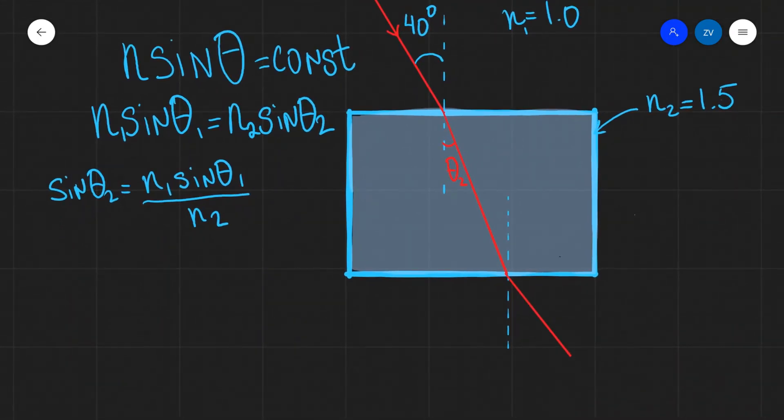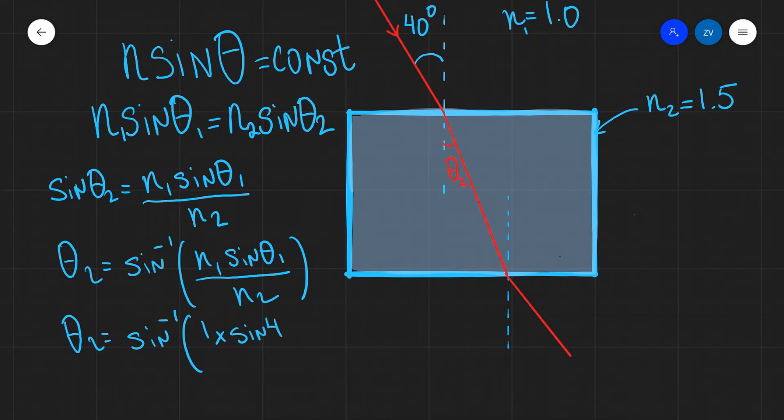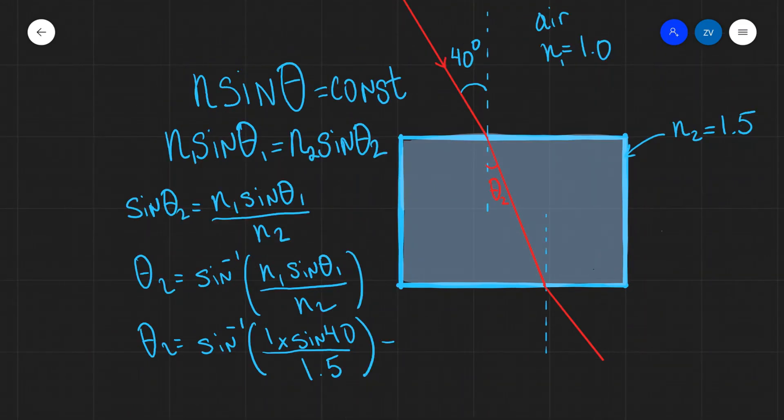We need to take the inverse sine now. So theta 2 will be equal to the inverse sine of N1 sine theta 1 divided by N2 like so. And now we can start plugging in some numbers. Theta 2 will be equal to the inverse sine of N1 which is just equal to 1 times sine of 40 degrees divided by N2 which is equal to 1.5 which is equal to 25 degrees. So the value of our angle of refraction is 25 degrees.